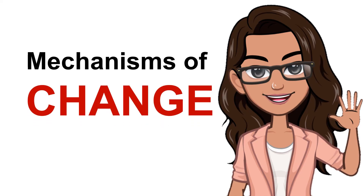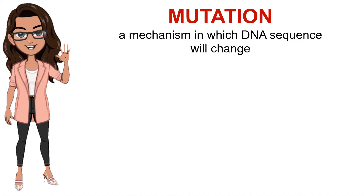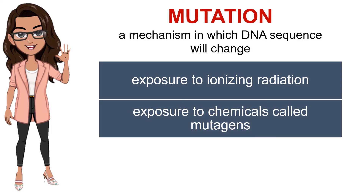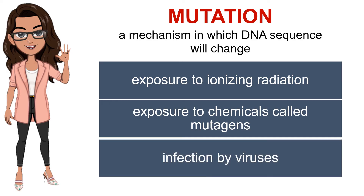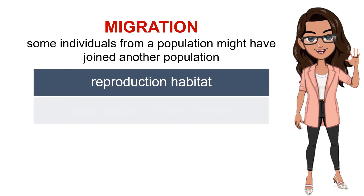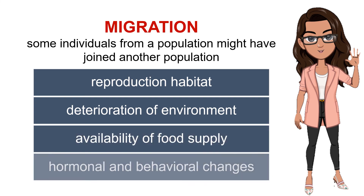Moving on, let's look at the mechanisms of change. Mutation is a mechanism in which the DNA sequence changes. The DNA sequence may mutate during cell division due to: exposure to ionizing radiation, exposure to chemicals called mutagens, or infection by viruses. Mutations that happen in the eggs and sperm can be passed on to offspring. Migration takes place when some individuals from a population join another population. Animals migrate for several reasons such as reproduction, habitat deterioration, availability of food supply, and even hormonal and behavioral changes.